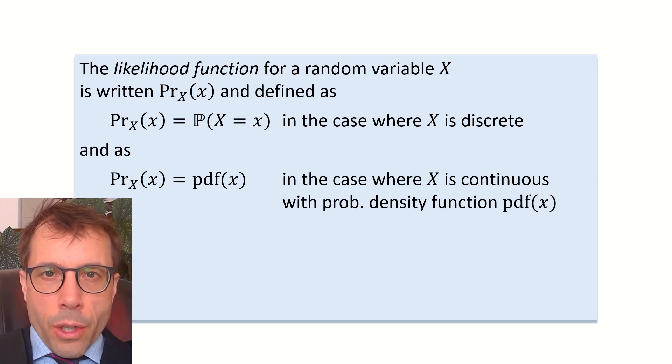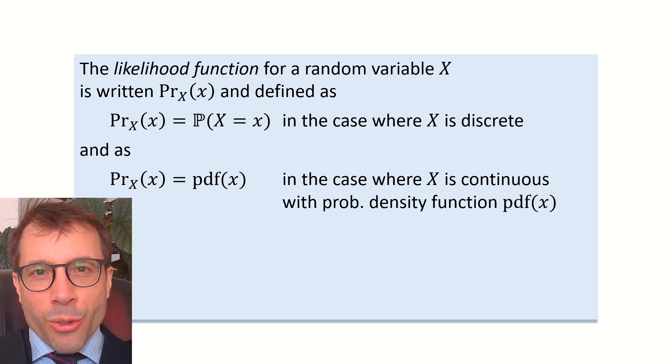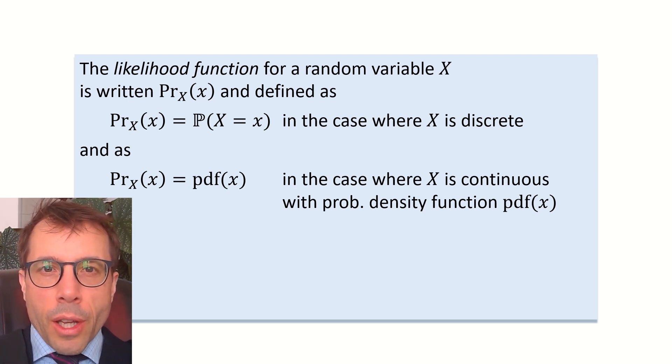There are two clauses in this definition, one for discrete random variables where we just use probability, one for continuous random variables where we use the probability density function. There are loads of results in machine learning that have two versions, one for discrete and another for continuous. And it's a real nuisance to have to keep saying every single sentence twice,